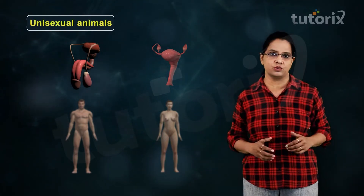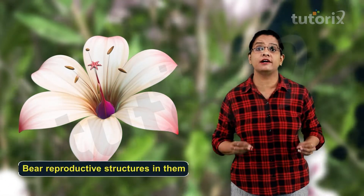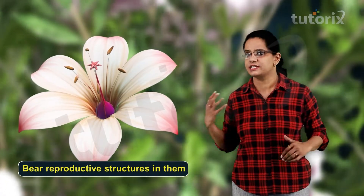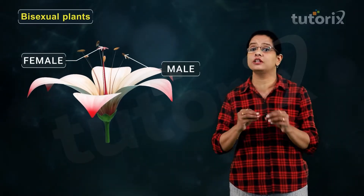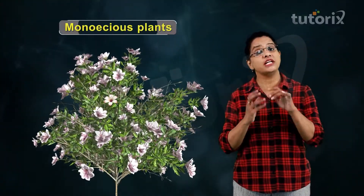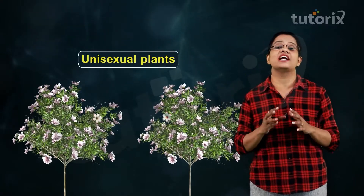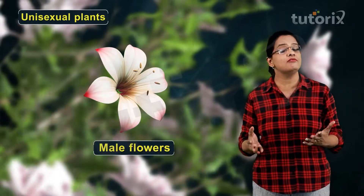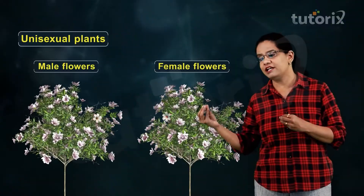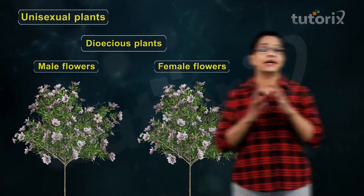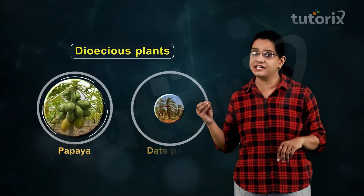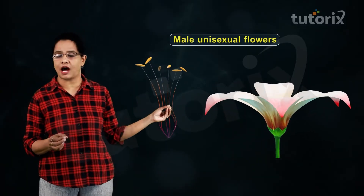In flowering plants, flowers are the structures that bear reproductive organs. Bisexual plants are those in which male and female structures are borne on the same flower. Unisexual plants are those in which one plant has male flowers and another has female flowers — such plants are also known as dioecious plants. Examples of dioecious plants are papaya and date palm.